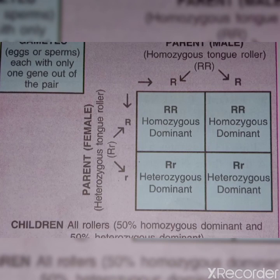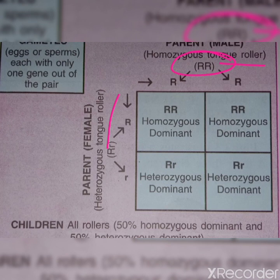In front of you there is a family where both parents are phenotypically similar — both are tongue rollers — but genotypically dissimilar. The male is homozygous dominant, capital R capital R, and the female is heterozygous dominant, capital R small r. We draw one square divided into four parts. From the male we write one capital R on one side and one capital R on the other side.